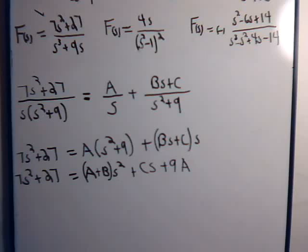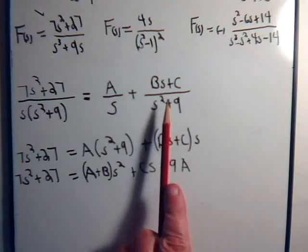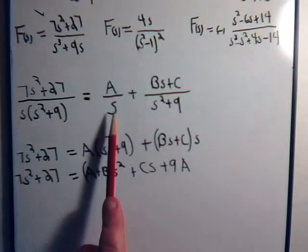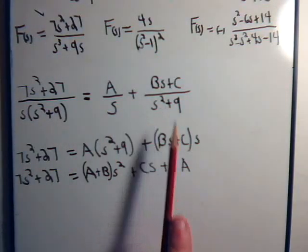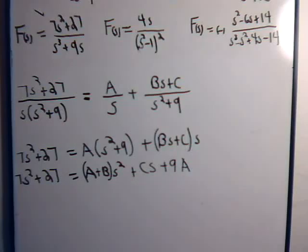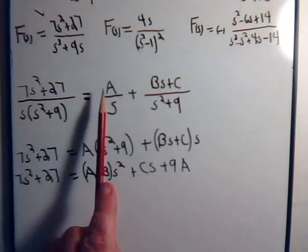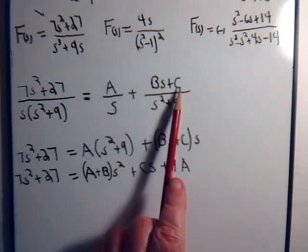Now notice that here, using the technique of partial fractions, this is the correct way to set it up. Here's a linear factor. Here's a quadratic factor. So that means now we have three unknowns we have to solve for. A, B, and C.